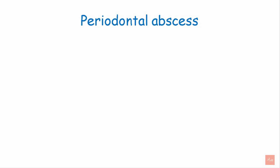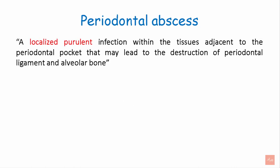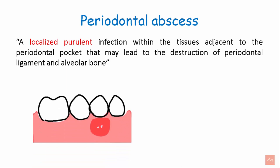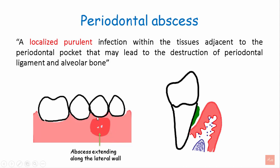A periodontal abscess is a localized purulent infection within the tissues adjacent to the periodontal pocket that may lead to destruction of the periodontal ligament and alveolar bone. It is associated with deep periodontal pockets in the presence of plaque and bacteria, and the abscess can extend from the marginal gingiva beyond the mucogingival junction.